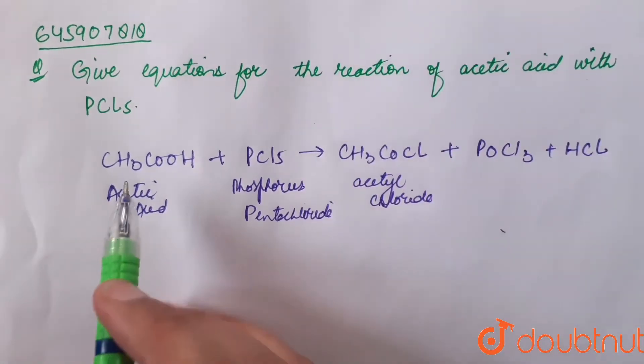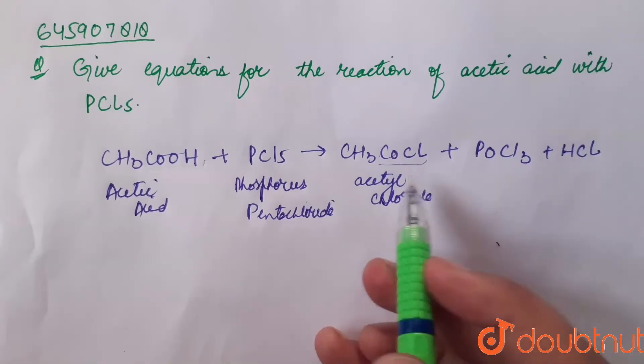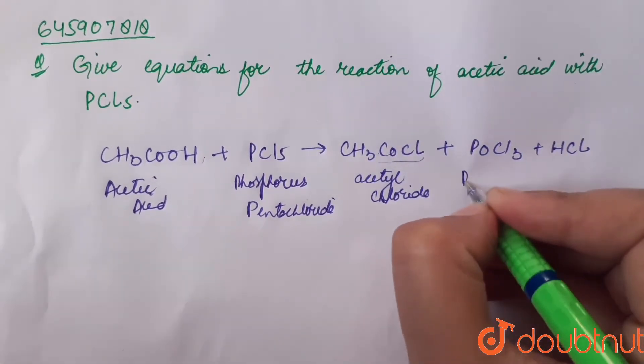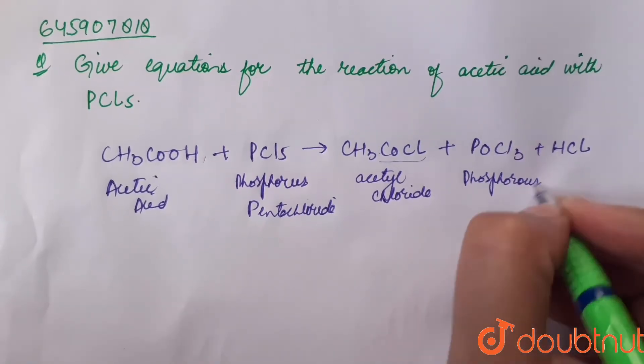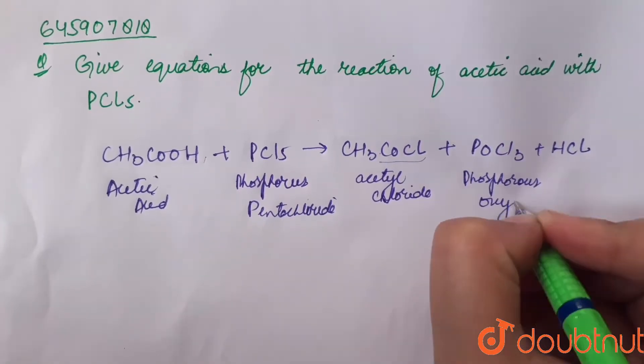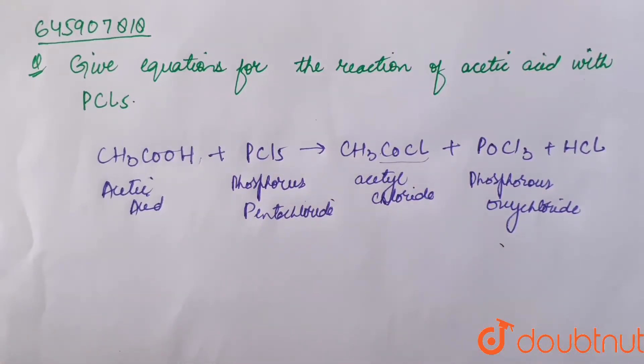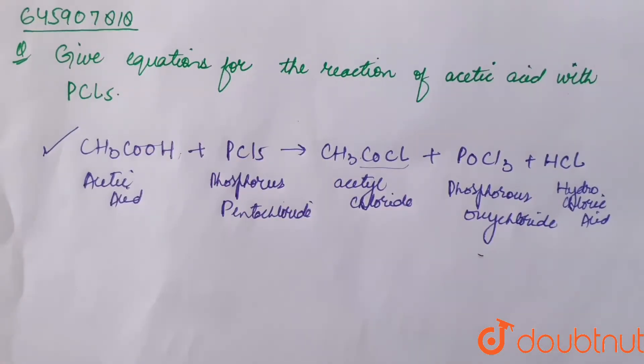In this reaction, COOH is converted to COCl. And along with acetyl chloride, we get phosphorus oxychloride and hydrochloric acid. So this is the equation for reaction of acetic acid with PCl5. Thank you.